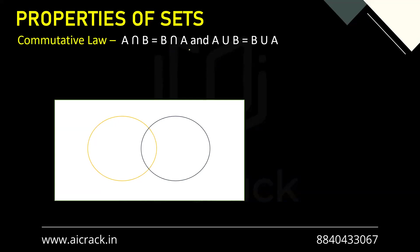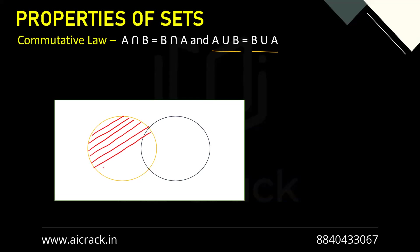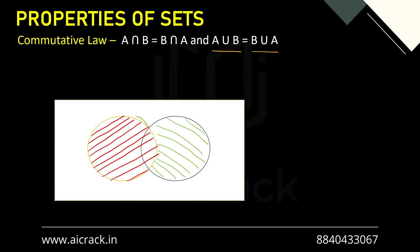Let's take an example of A union B and B union A and demonstrate that in the Venn diagram. When we are plotting A union B, we will be marking the A region first, and then we are marking the B region. Eventually we are covering all the elements — we're not skipping any element. We get this entire region as a result of A union B. Basically, all elements of A are covered first and then the remaining elements of B are taken care of.